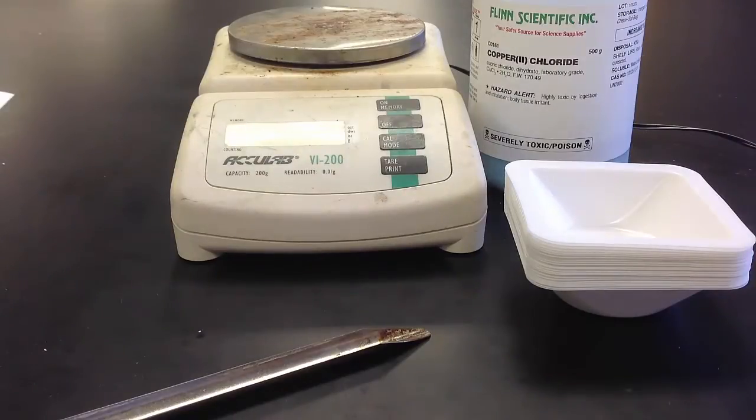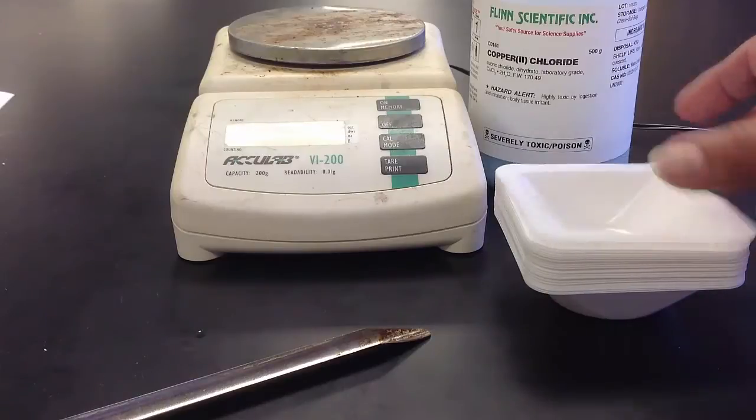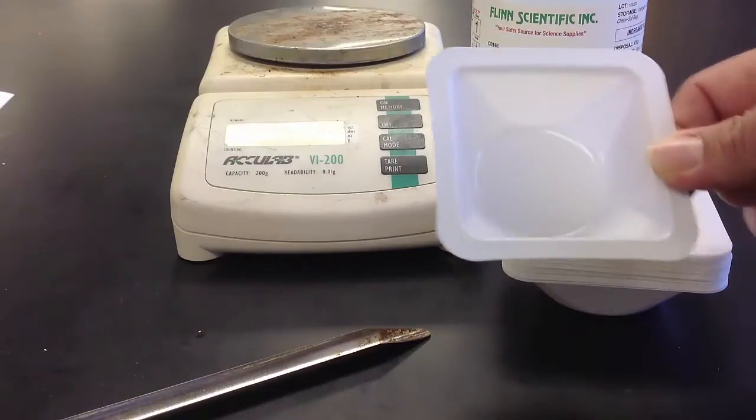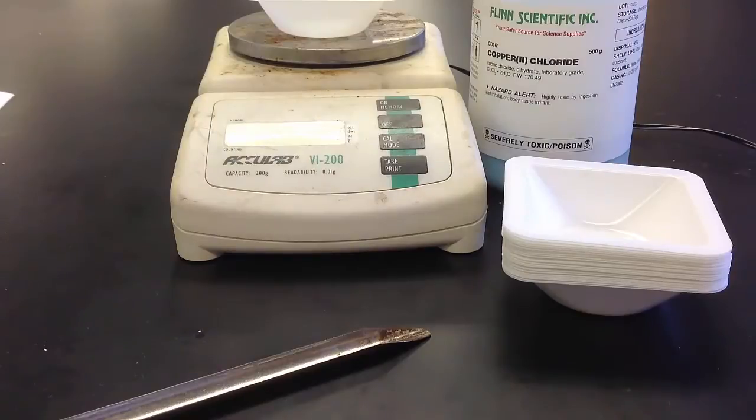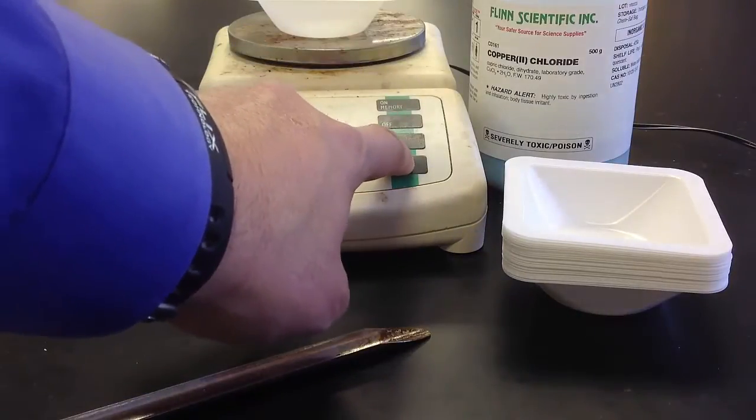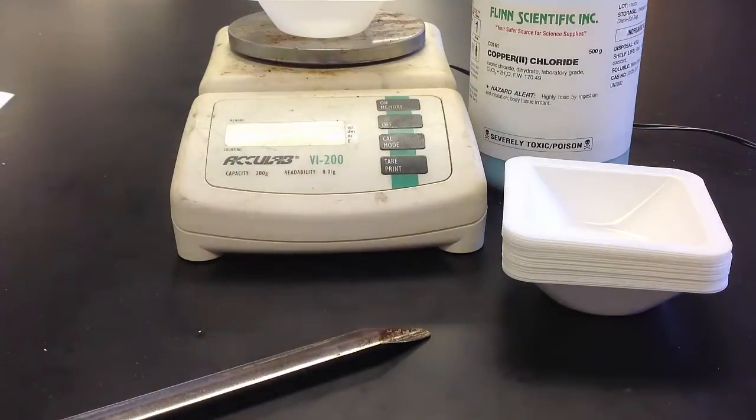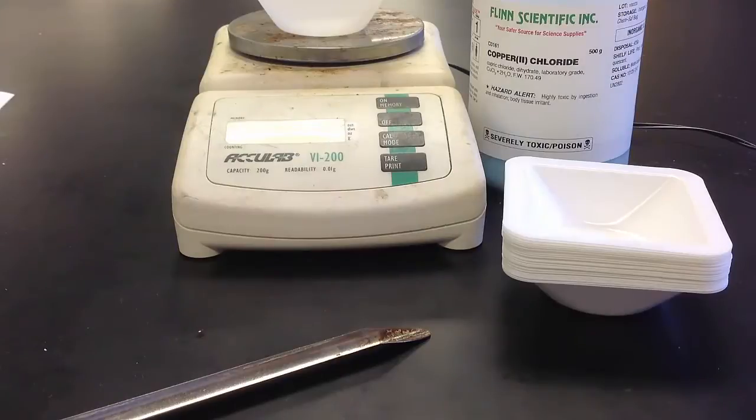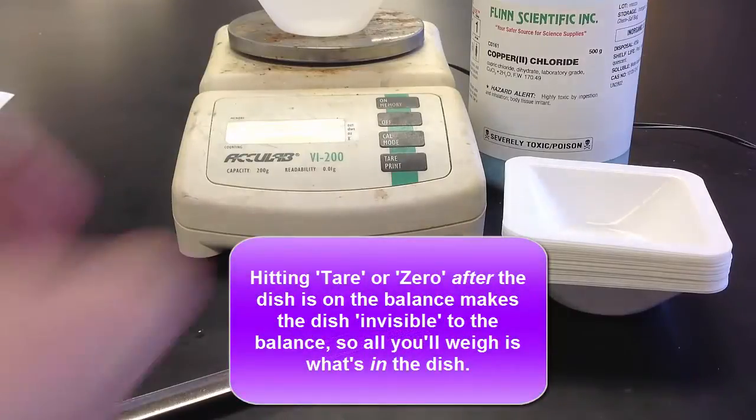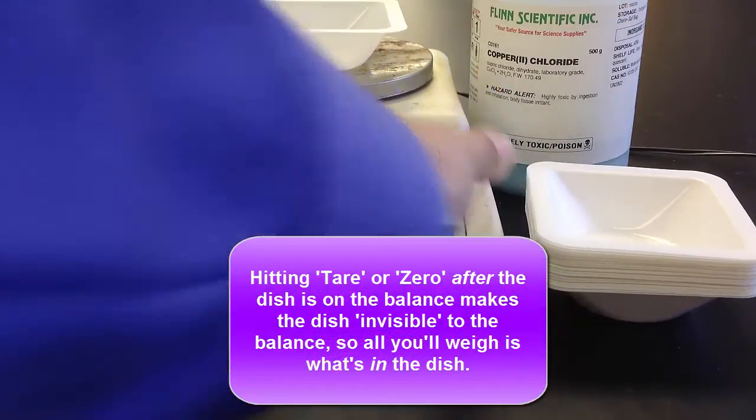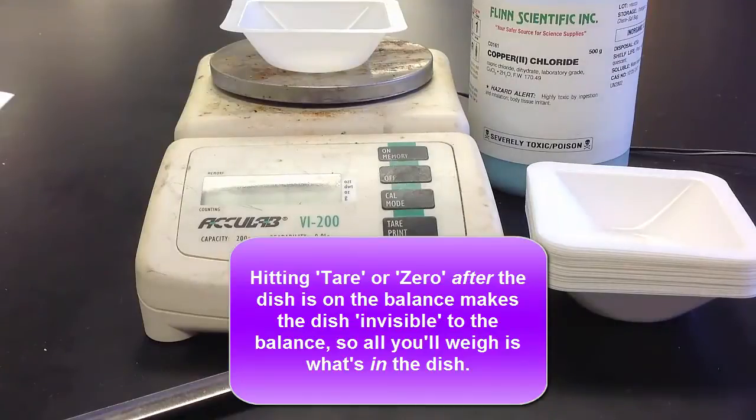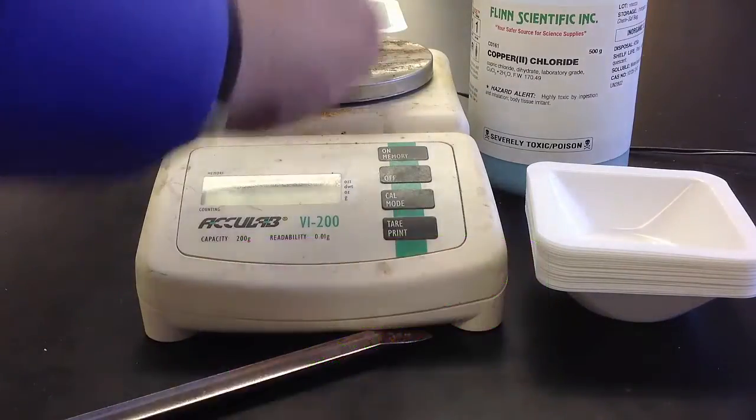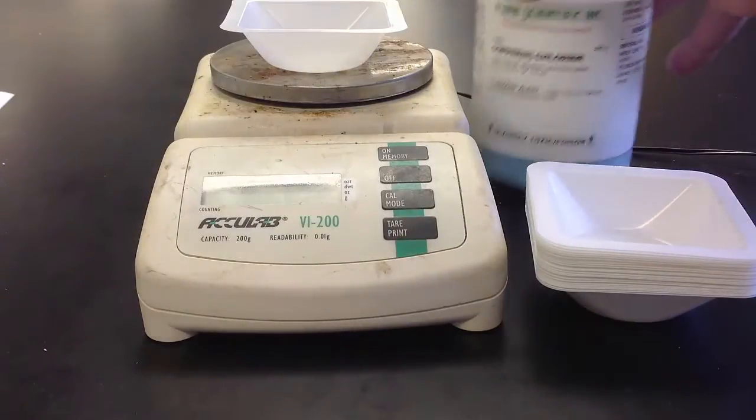And then we're going to take a weighing dish. This is a weighing dish, a little plastic dish. And we're going to put it up on top of the balance pan. And we're going to press the tare or zero button again. And we're going to do that so that the balance effectively doesn't see the weighing dish. The weighing dish becomes invisible to the balance if we do this. So we put the weighing dish on, we hit the zero button.